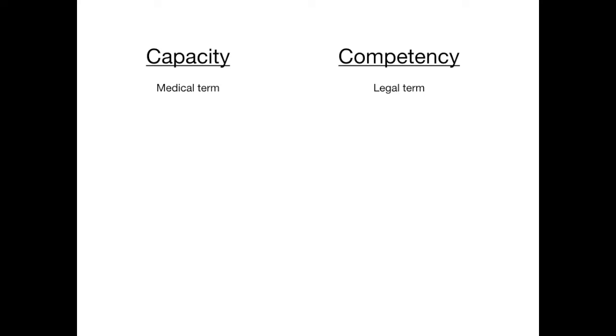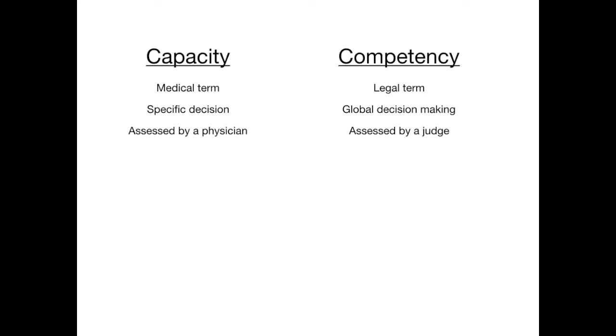Let me point out that capacity is a medical term and competency is a legal term. Capacity is a patient's ability to make a specific medical decision. Competency is their legal right to have global decision making. If somebody is stripped of competency, that's assessed by a judge. But if somebody is deemed not to have medical capacity to make a certain medical decision for themselves, that's assessed by a physician.